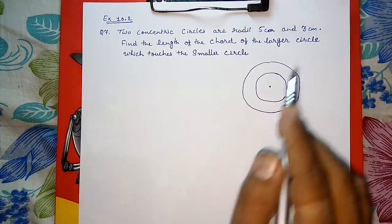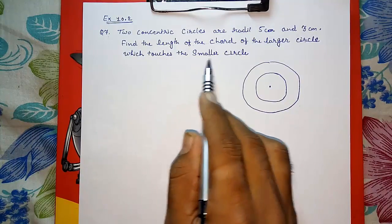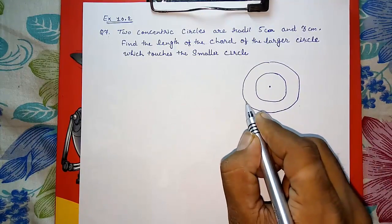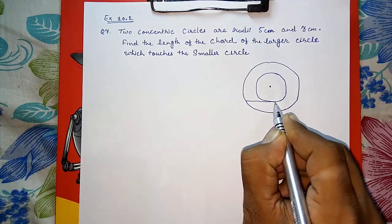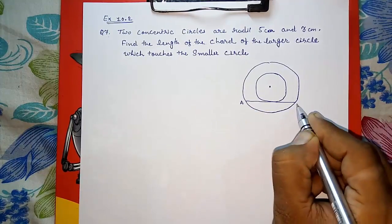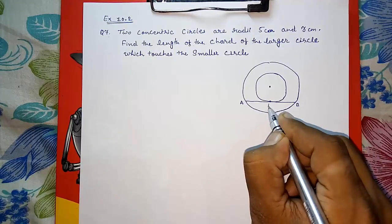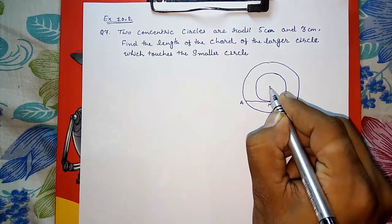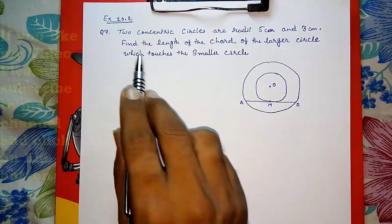Find the length of the chord of the larger circle. So we have to draw a chord of the larger circle which touches the smaller circle. Look here, I am drawing a chord AB which is touching the smaller circle at point M, and this is the center point O. Now we have to find the length of the chord, means we want to find AB.